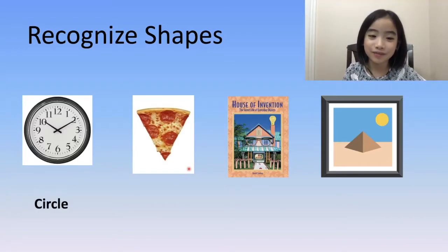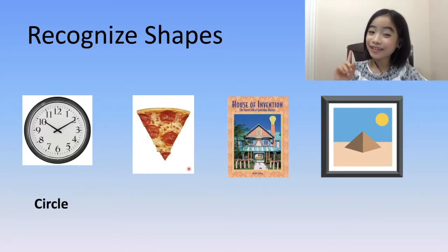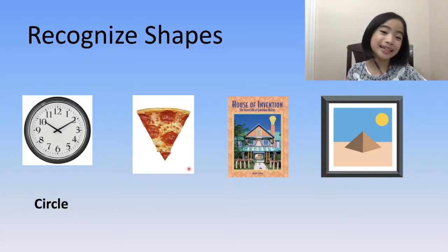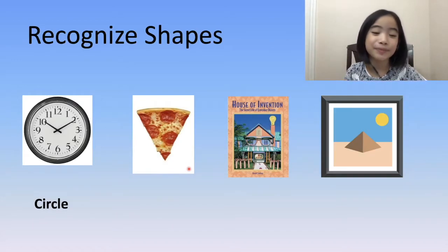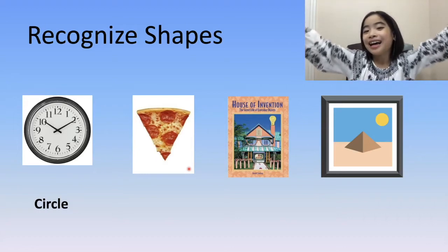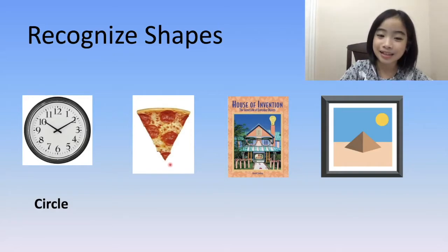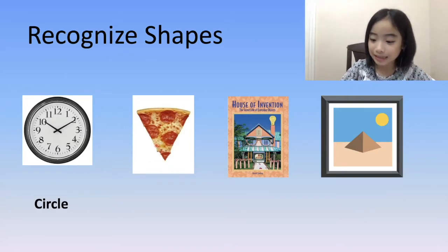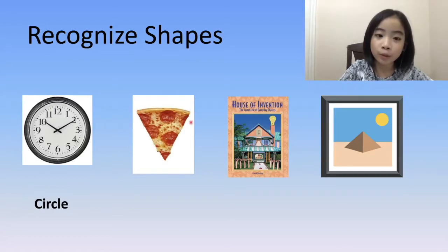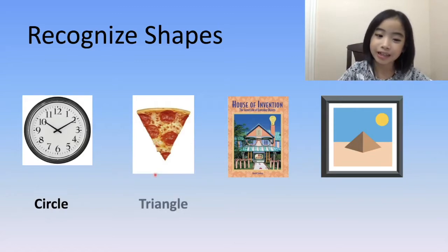The next one — I'm sure you know what it is because we eat it — and it is a pizza. I know everyone likes to eat pizzas. A pizza in this diagram is a shape that has three corners and three sides. It is called a triangle.